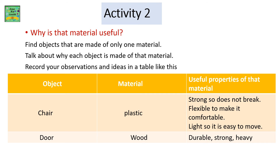Activity 2: Why is that material useful? Find objects that are made of only one material and talk about why each object is made of that material. Record your observations and ideas in a table like this. Object: chair, door. Material: plastic, wood.